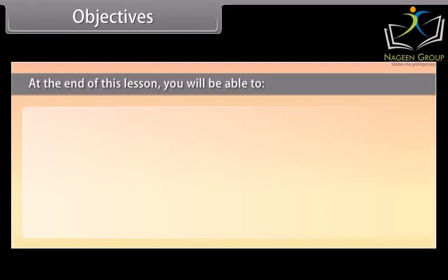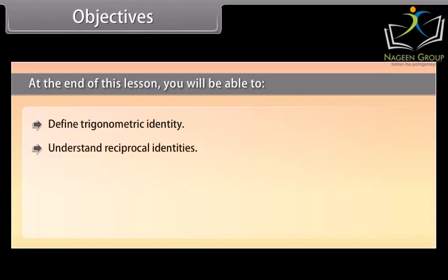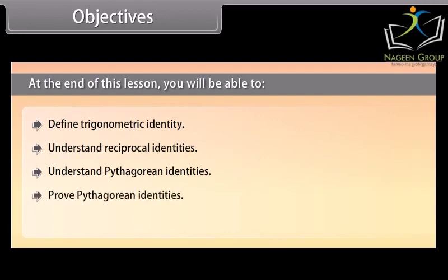Objectives. At the end of this lesson, you will be able to: define trigonometric identity, understand reciprocal identities, understand Pythagorean identities, prove Pythagorean identities, and solve examples related to Pythagorean identities.